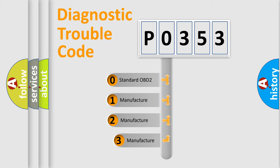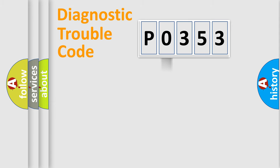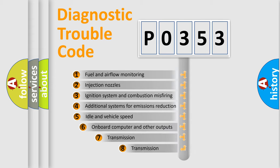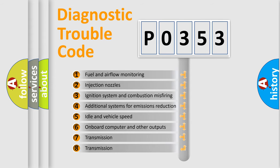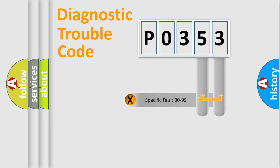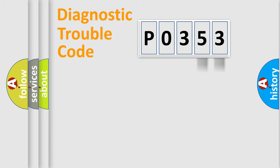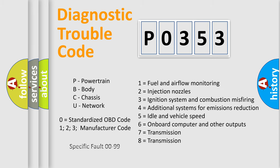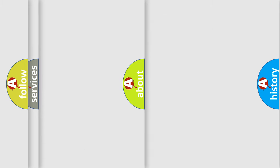If the second character is expressed as zero, it is a standardized error. In the case of numbers 1, 2, or 3, it is a more specific expression of a car-specific error. The third character specifies a subset of errors. This distribution is valid only for the standardized DTC code. Only the last two characters define the specific fault of the group, and this division is valid only when the second character is expressed by the number zero.